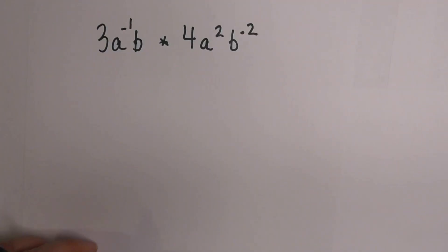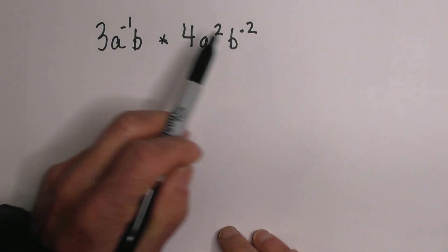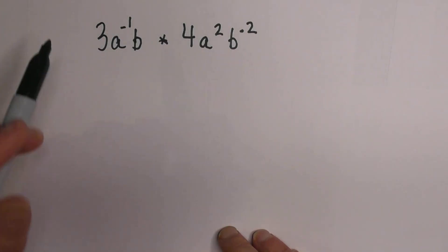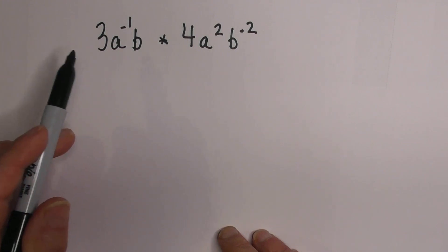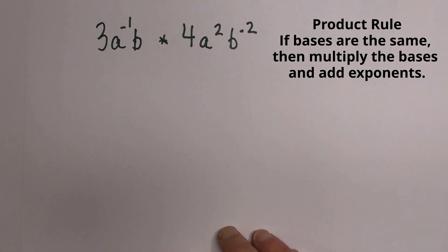Let's now work. In this example, we're going to deal with negative exponents, and also we're going to apply the product rule that states that the bases are the same. Then you multiply the bases and add the exponents. So let's get started.